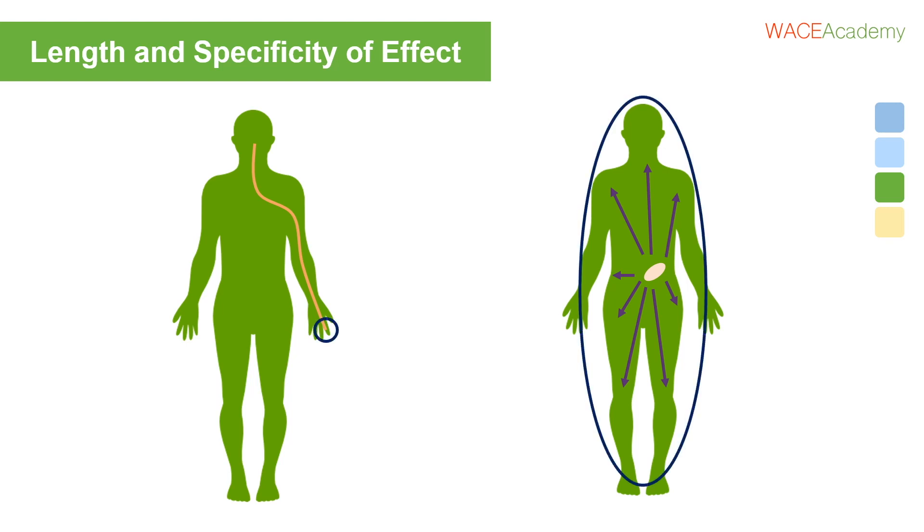This also means that endocrine system messages will have a much more widespread effect, because they're circulated throughout the body, whereas a nervous system message will stay pretty localized.